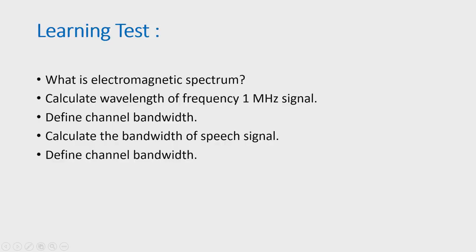Today we have learnt what electromagnetic waves and the electromagnetic spectrum are, and how to calculate wavelength. We defined channel bandwidth and signal bandwidth. For the learning test, answer the following questions: What is electromagnetic spectrum? Calculate the wavelength of a 1 MHz signal. Define channel bandwidth. Define signal bandwidth. Calculate the bandwidth of the speech signal. Thank you.